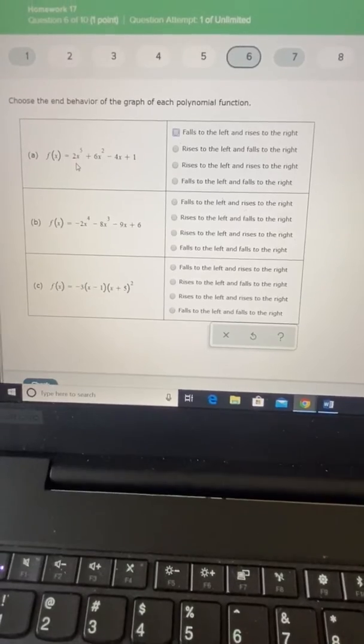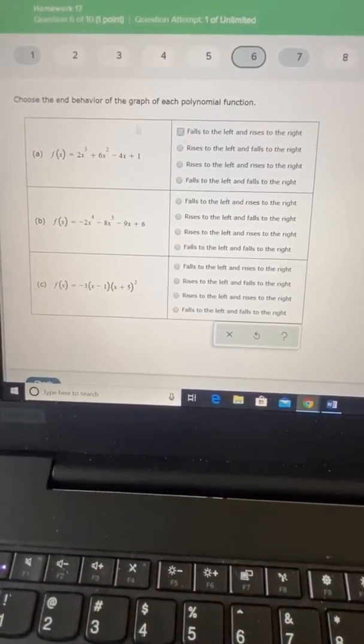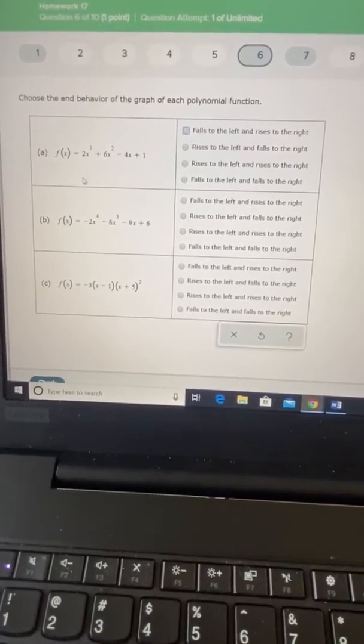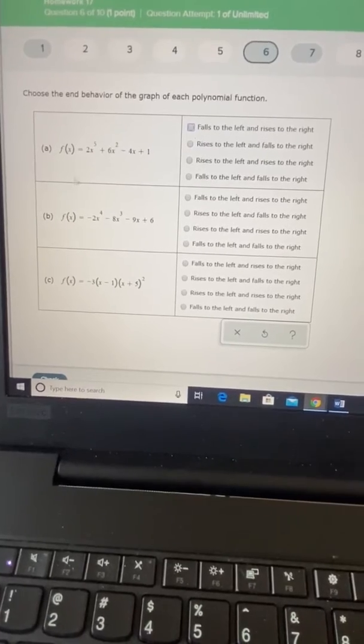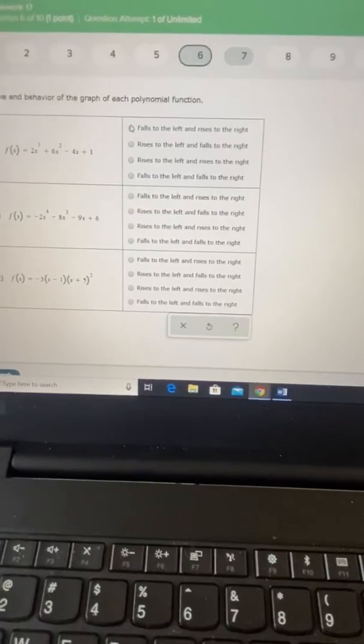So here the leading coefficient is positive, that means we're going to be falling to the left and rising to the right. So it's going to grow just like y equals x, falling in the left and rising to the right. So we'll click option one there.